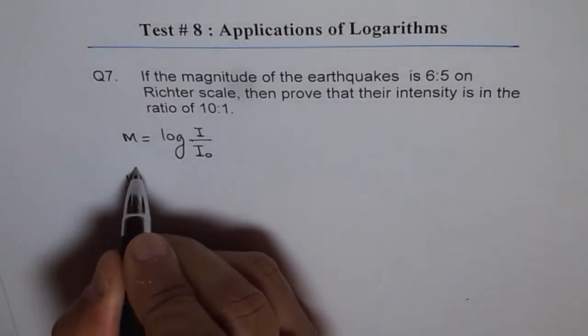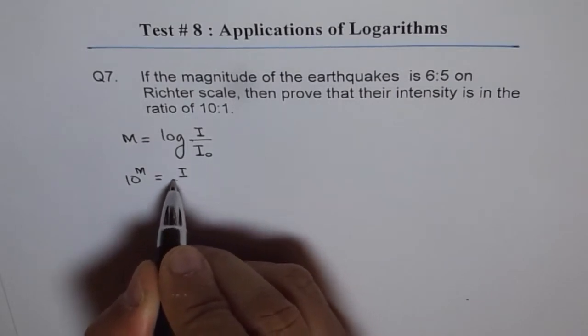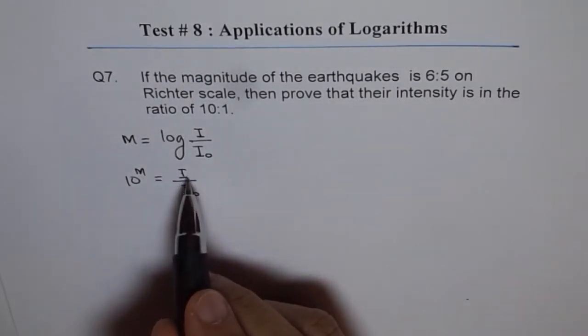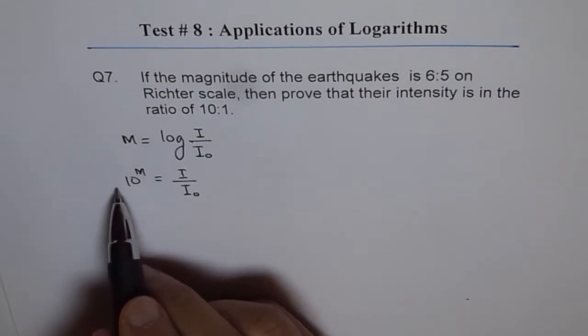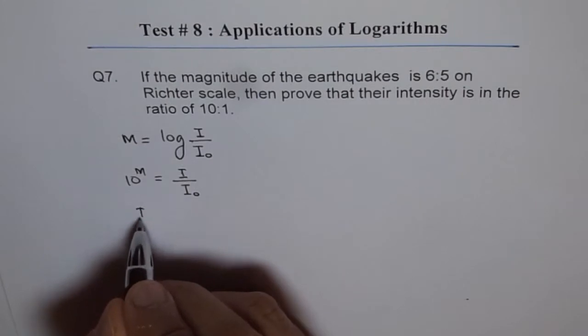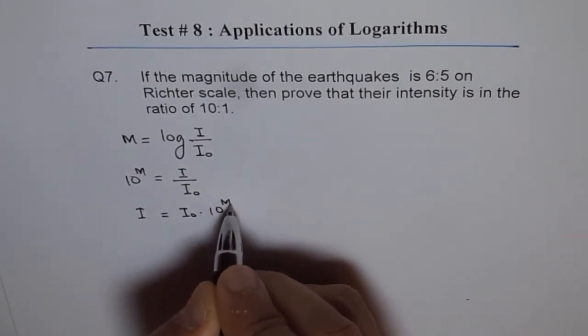We can write 10 to the power of M equals I over I₀. Therefore, I could be written as I₀ times 10 to the power of M. So we can write from here I equals I₀ times 10 to the power of M.